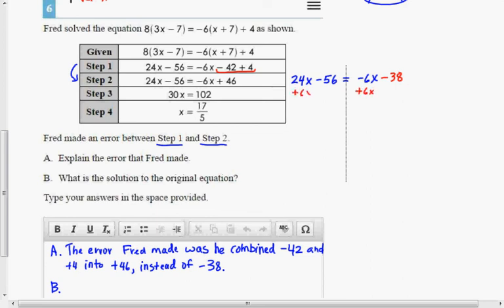I'm going to add 6x on both sides, and that way it cancels out on the right-hand side. And I end up with 30x minus 56 equals negative 38.